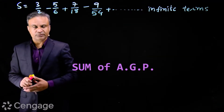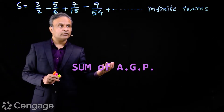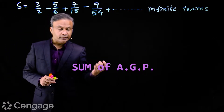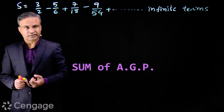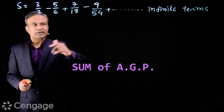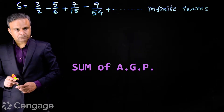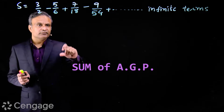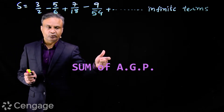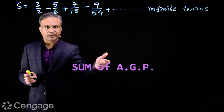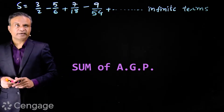Let's find the sum of infinite terms of this series. The terms are 3/2 minus 5/6 plus 7/18 minus 9/54 and so on. Here the new thing is that terms are occurring alternatively with plus and minus signs. In a GP we can have terms alternatively with plus and minus signs, but in an AP we do not have such a plus-minus pattern.